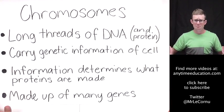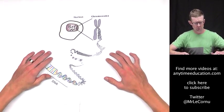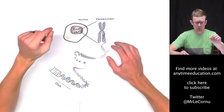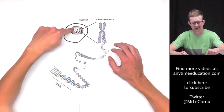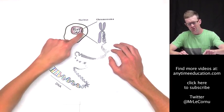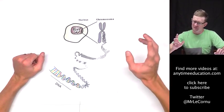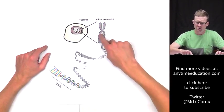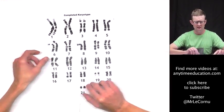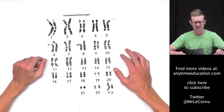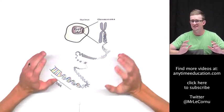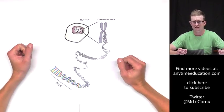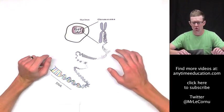Here we've got a cell — a eukaryotic cell, because it has a nucleus. Within the nucleus, we find chromosomes. You might be wondering why this chromosome is in an X shape, while the ones from the karyotype were just one linear component. The reason is that this is a chromosome where the DNA has already undergone replication and the cell is about to divide.